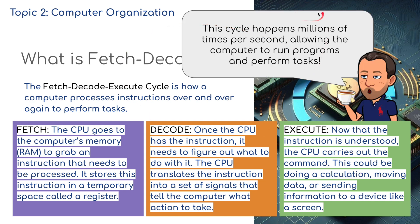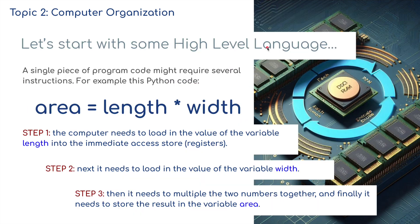Finally, we move on to execute. Now that the instruction is understood, the CPU carries out the command. This could be doing a calculation, moving data, or sending information to a device like a screen. This cycle happens millions of times per second, allowing the computer to run programs and perform tasks. We'll start with some high-level language — I've got a single line of code here.